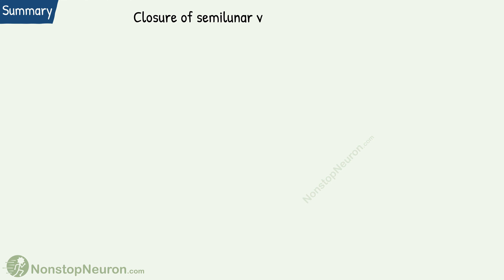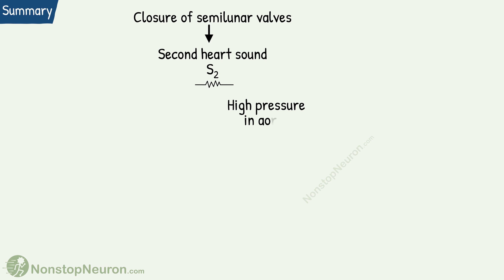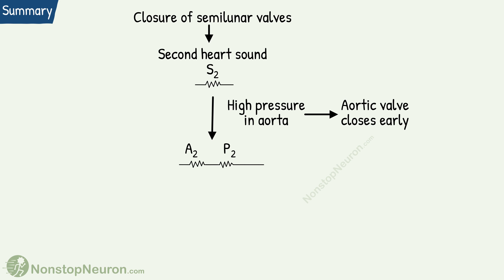The closure of semilunar valves produces the second heart sound. The semilunar valves include the aortic valve and pulmonary valve. Normally, the higher pressure in the aorta causes the aortic valve to close a little early, so there is a splitting of the second heart sound into aortic and pulmonary components.